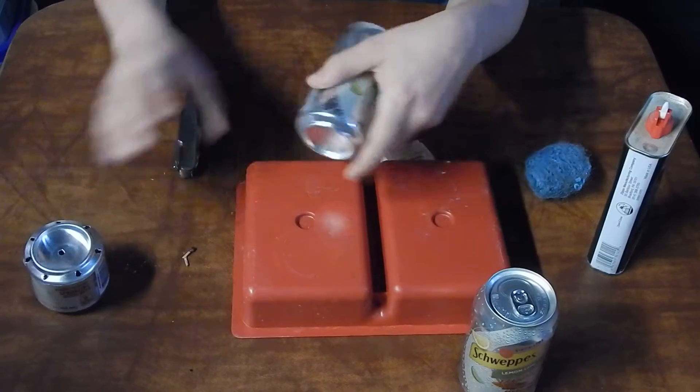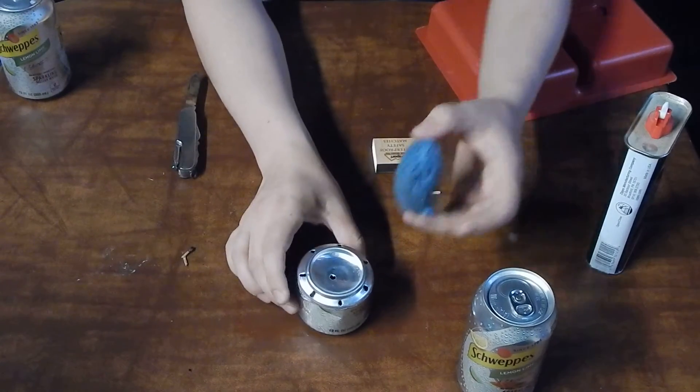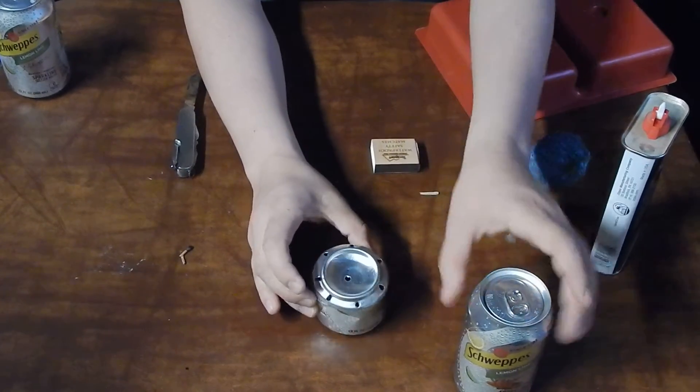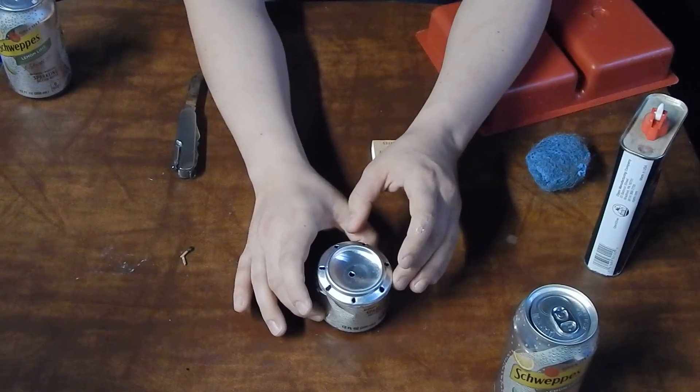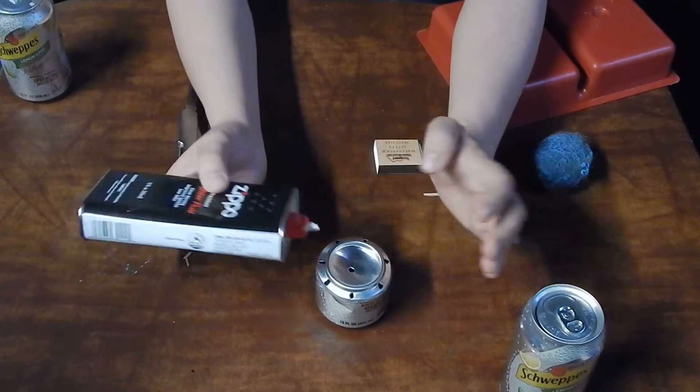So once you have the two halves, you're going to put the steel wool inside of the two halves. Once the steel wool is inside, you're going to compress the two together. Once you have these two together, you're going to add your fuel source.